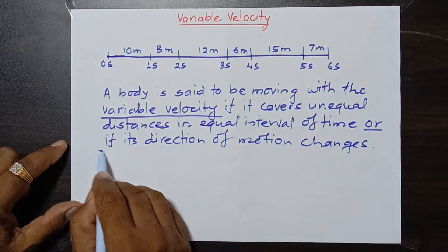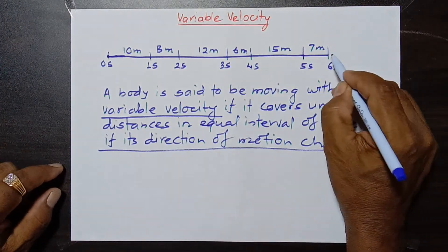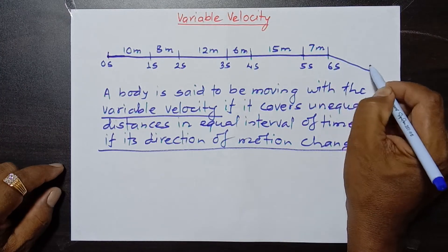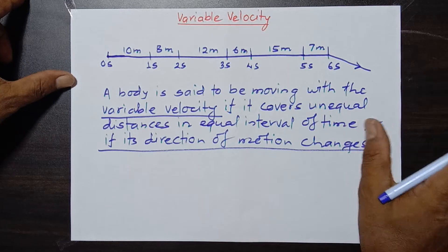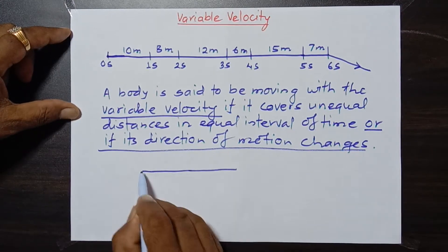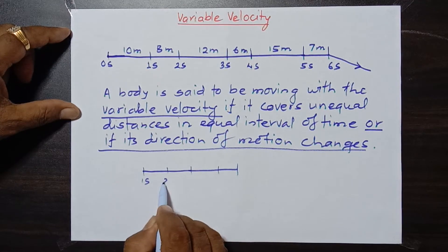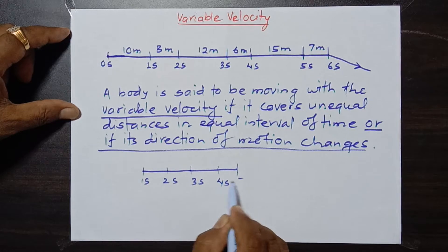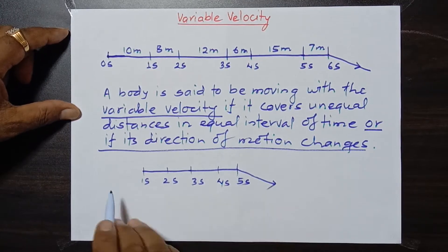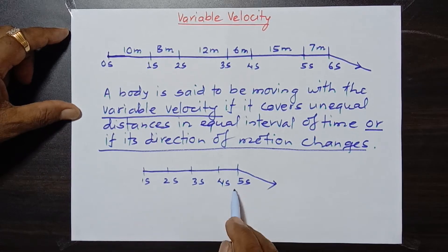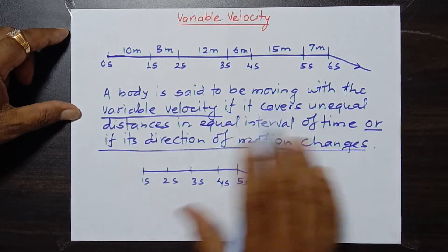But here is a twist. The later part of this definition says: or if its direction of motion changes. What does this mean? If a body changes its direction — say it moves this way — then also it is said to be in variable velocity. Even if a body covers equal distance in equal intervals of time for several seconds, if it finally changes its direction, then we can no longer say it is in constant or uniform velocity. When direction changes, its velocity becomes variable.